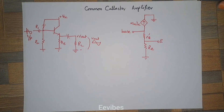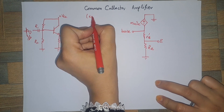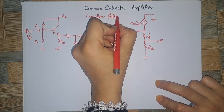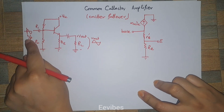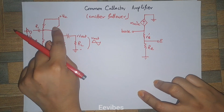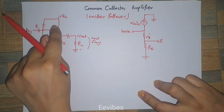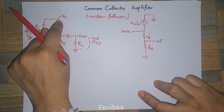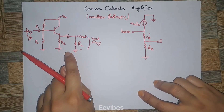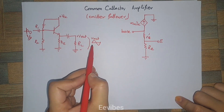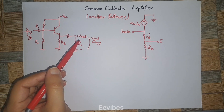Hi everyone, this is Asma Mushtaq from the EE Wipes. In this video lecture I will explain what is the common collector amplifier. Another name of the common collector amplifier is the emitter follower. This name is given because in the common collector amplifier the base point is the input point, and you take the output across the emitter terminal. The output follows exactly the input pattern and is always in phase with the input.